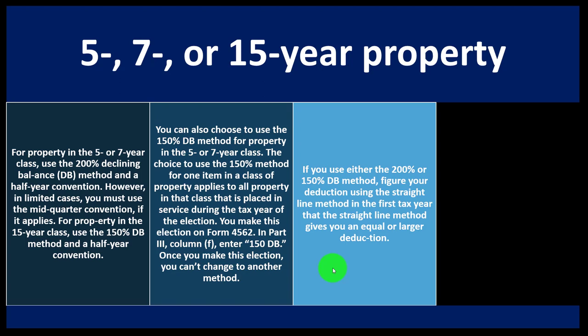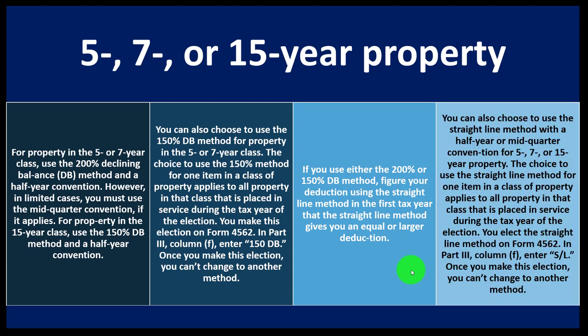If you use either the 200% or 150% declining balance method, figure your deduction using the straight-line method in the first tax year when the straight-line method gives an equal or larger deduction. So when you calculate the double declining method with a half-year convention, you take half of it and you're essentially back to the normal straight-line for the first year — it ends up looking like a straight-line method, even though you're using the double declining method.